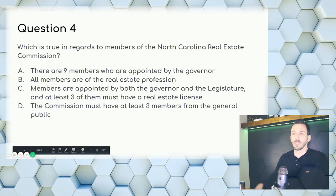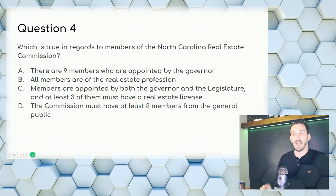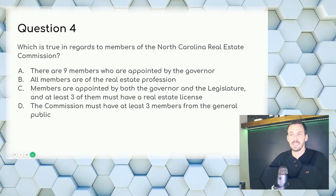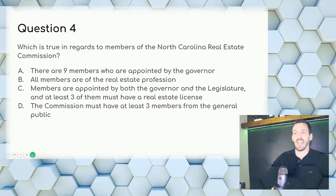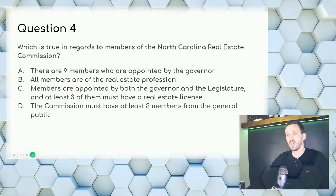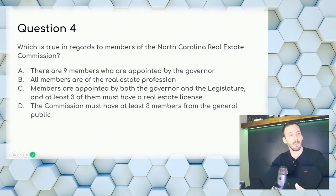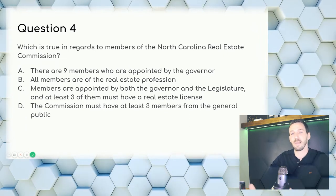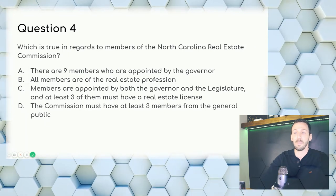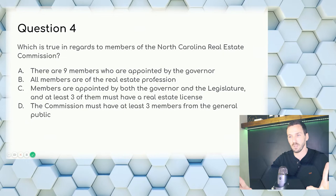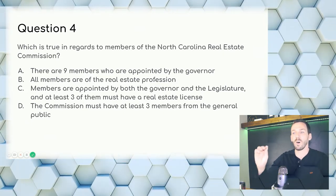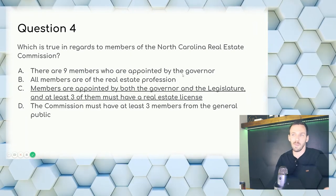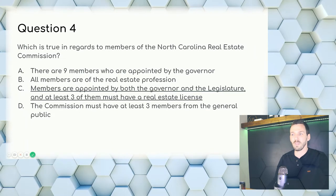Question 4: Which is true regarding members of the North Carolina Real Estate Commission? There is a mixture of members, so A (all nine appointed by governor) and B (all are real estate pros) are incorrect — they imply one type only. Answer: C — members are appointed by both the governor and the legislature, and at least three of them must have a real estate license.